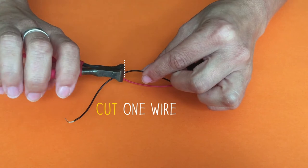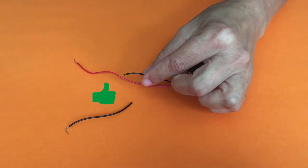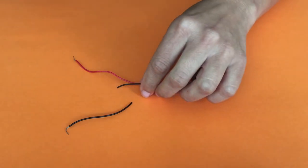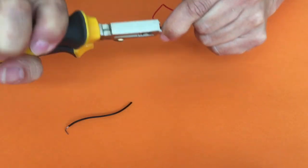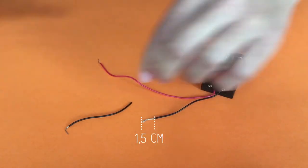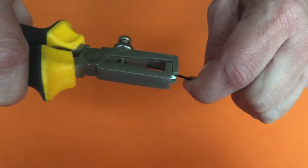Cut one of the wires in the middle, it doesn't matter which one. Now you should strip the wires. The stripped parts should be about one and a half centimeters long. Be sure to adjust your stripping pliers accordingly to the thickness of the wire.